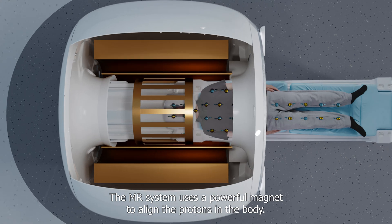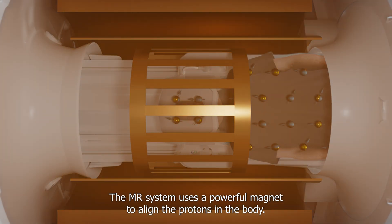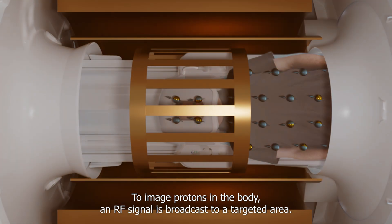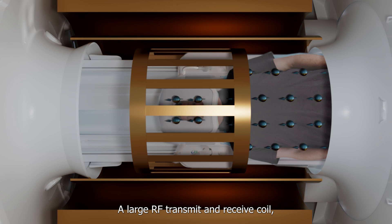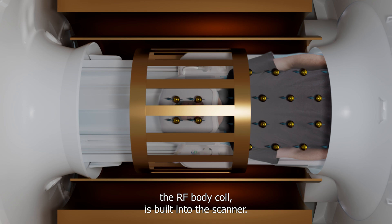The MR system uses a powerful magnet to align the protons in the body. To image protons in the body, an RF signal is broadcast to a targeted area. A large RF transmit and receive coil, the RF body coil, is built into the scanner. The region of interest is placed in the center of the RF body coil, often together with a receive coil.